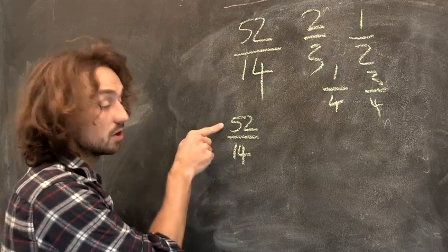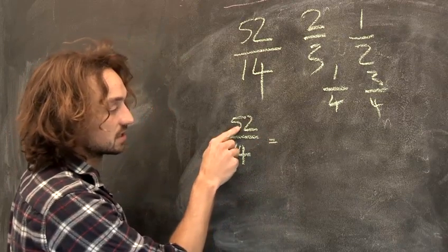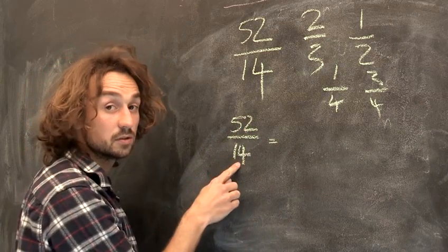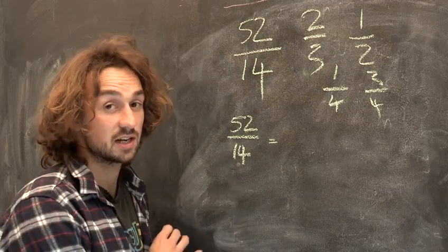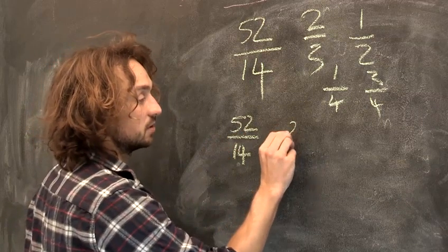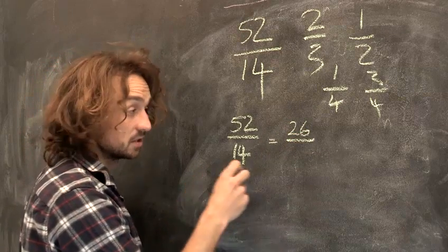So whatever I'm going to do to the top, I have to do to the bottom. So let's say I divide this top number by 2. So if I divide the top by 2, I have to divide the bottom by 2. And in doing that, I haven't changed anything. I've just simplified it. So 52 divided by 2, that's 26. And 14 divided by 2, that's 7.